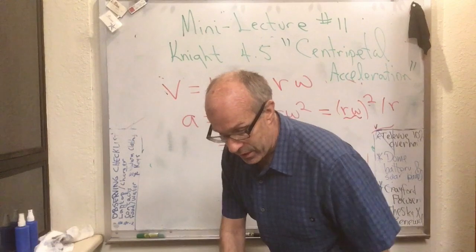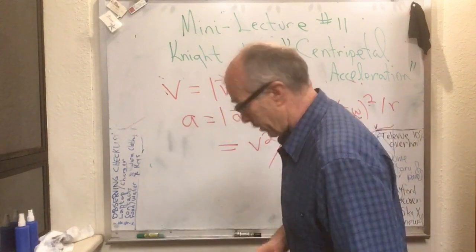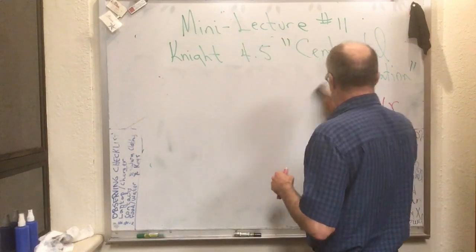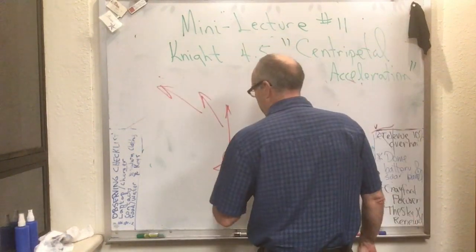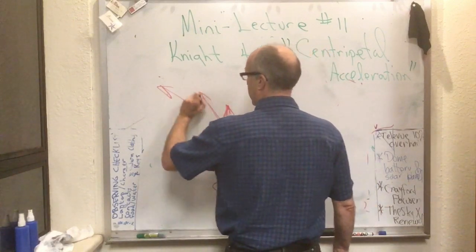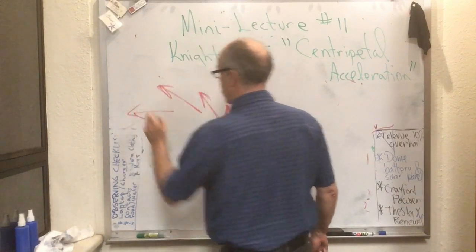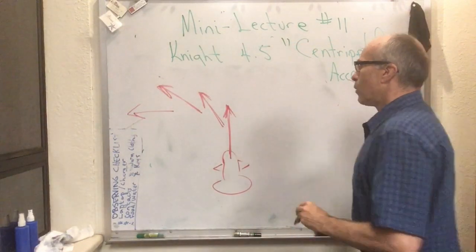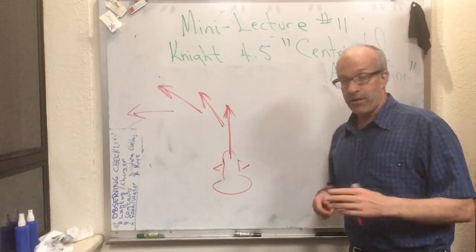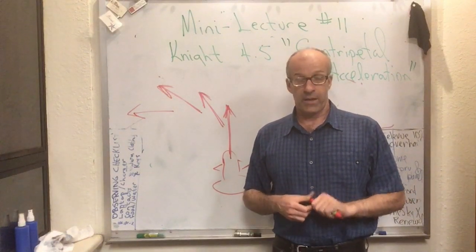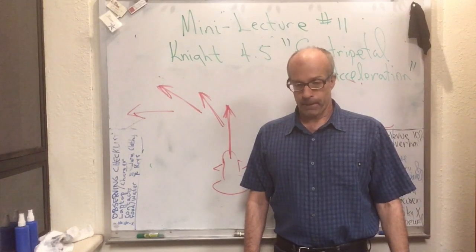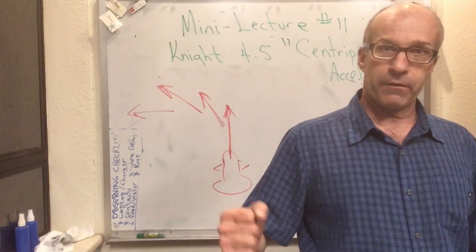Remember, this is not something new. You already learned about centripetal acceleration qualitatively when we were doing the airplane turning to the west problem while maintaining the same speed. Here's the airplane going north, turning a little to the west, turning more to the west — we already worked this qualitatively. Now I've been through some mathematics that allows you to quantitatively say how large that acceleration vector is. See you in class on Friday.